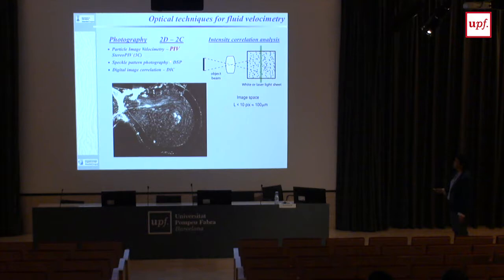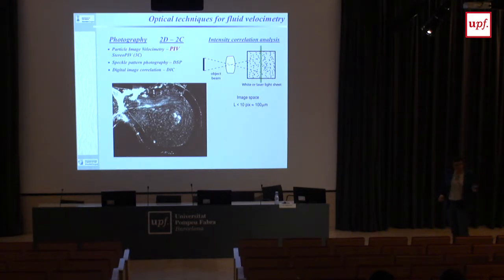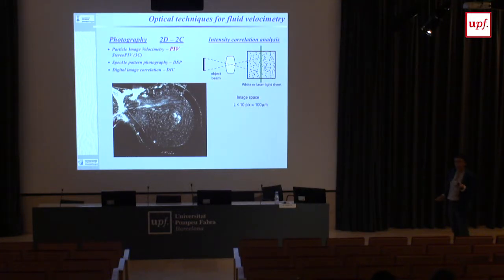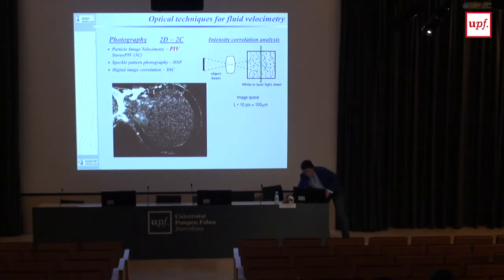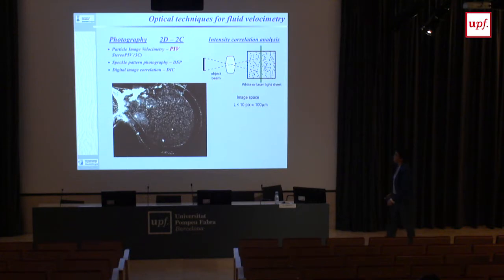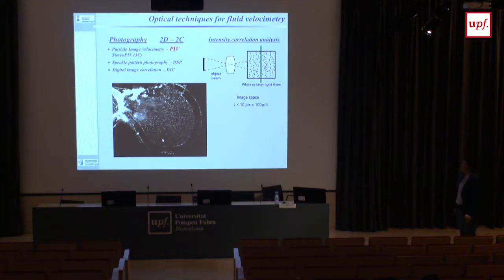In solid mechanics it is called speckle when using a laser, and digital image correlation when using white light with paint on the surface. For this kind of testing, a laser is not strictly required — any light works — but lasers are good because you can put more power into a narrow light sheet. We usually use a light sheet. This is just for illustration — these are not real PIV images. Here is an image taken with the laser firing at about 1,000 pulses per second and the camera at 50 frames per second, giving a multi-exposed image showing clearly how the flow is changing.